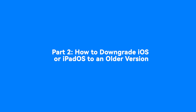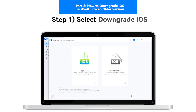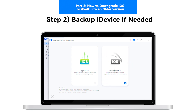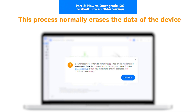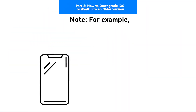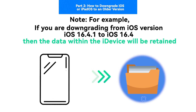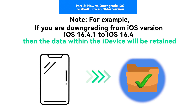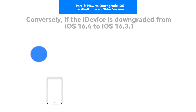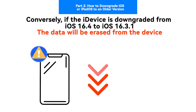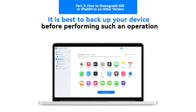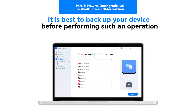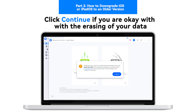Part 2: How to Downgrade iOS or iPadOS to an Older Version. Step 1 — Select Downgrade iOS. Step 2 — Backup iDevice if needed. A prompt will appear asking you to back up your iOS device data before executing this process, as the process normally erases the data of the device. Note: for example, if you are downgrading from iOS 16.4.1 to iOS 16.4, the data within the iDevice will be retained. Conversely, if the iDevice is downgraded from iOS 16.4 to iOS 16.3.1, the data will be erased. Thus, it is best to back up your device before performing such an operation. Click Continue if you do not mind the erasing of your data.